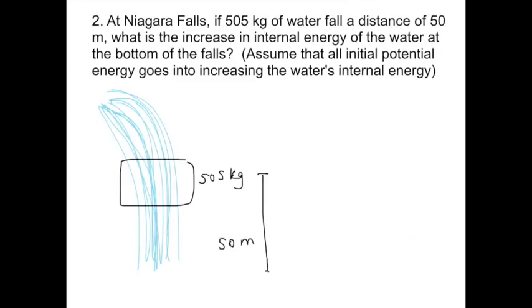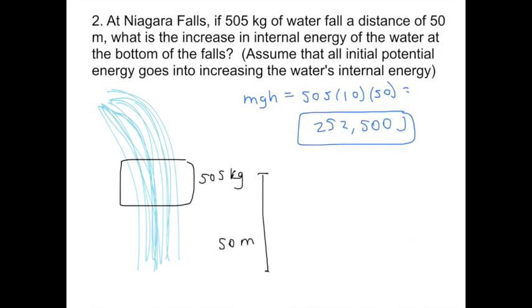So like in the last problem, we're going to start with gravitational potential. That'll be mgh. We know mass, that's 505. g is 10. And h will be 50 meters. This all comes out to 252,500 joules. So that's the initial gravitational potential energy. And then the problem states that all of this initial energy is converted to internal energy. So this will be the final answer. The water is left with 252,500 joules of internal energy.